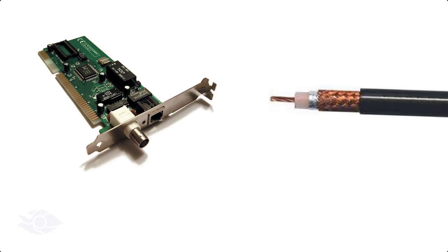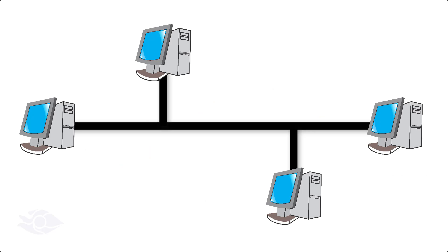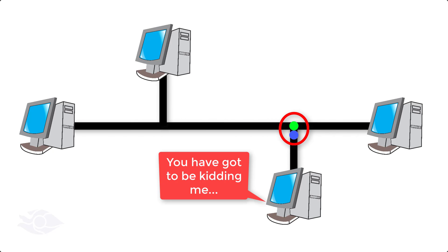The early standard of Ethernet required that all network interface cards used for implementing Ethernet have a maximum speed of 10 megabits per second with a half duplex mode of communication. Everything was going well and devices could communicate properly, except that they suffered a major problem: collisions.